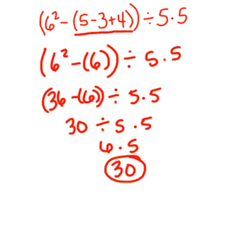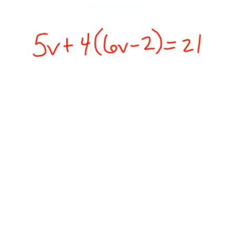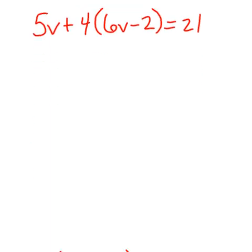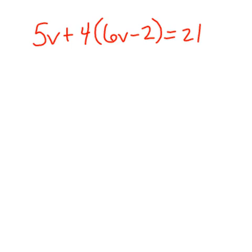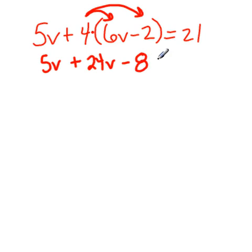Moving on. Number 3. Let's start solving some equations. Multi-step equations. This first instance, what do we need to do? We need to distribute here and here. Because there's that understood multiplication. So I'm going to bring the 5v down. Plus 4 times 6v is 24v. 4 times a negative 2 is negative 8. Equals 21.